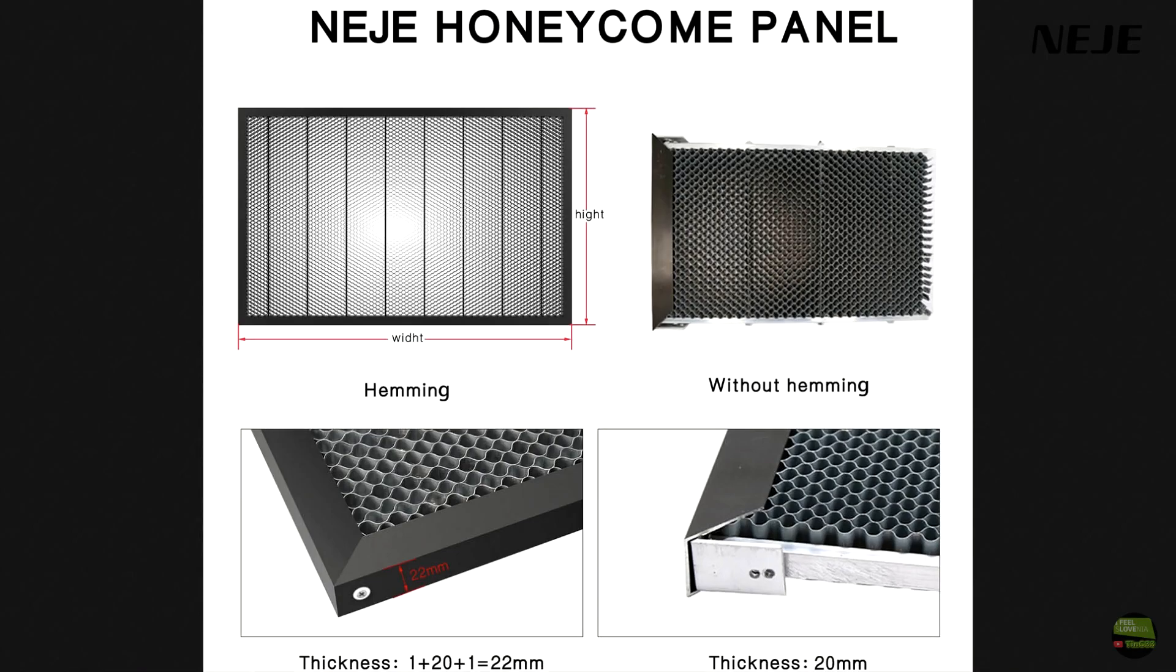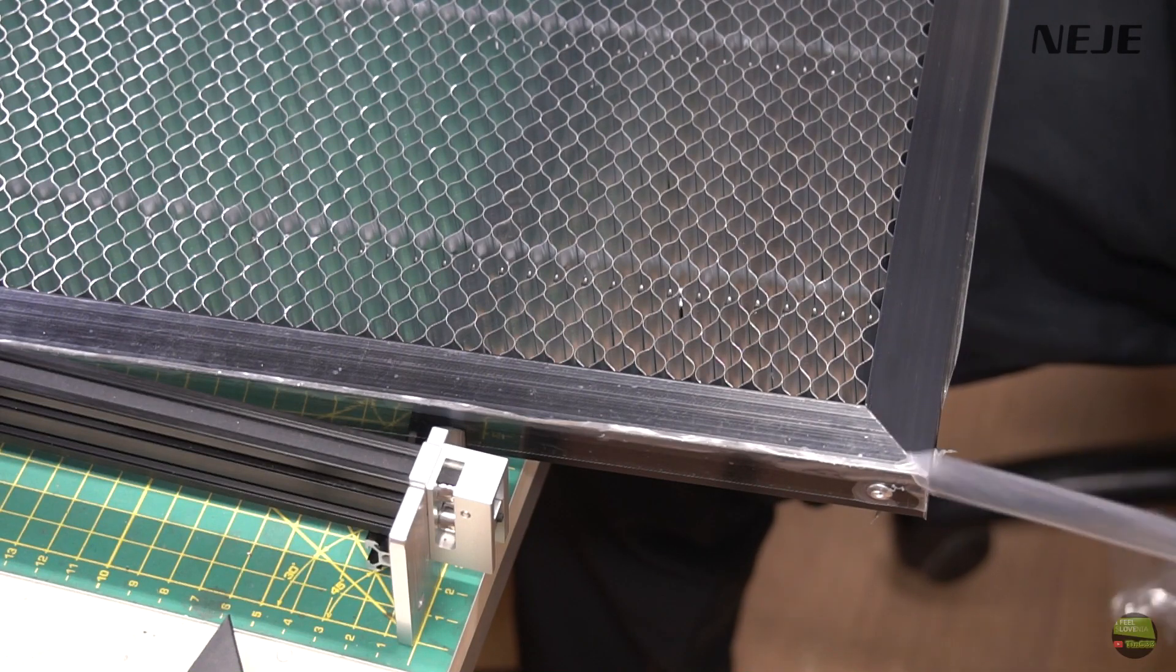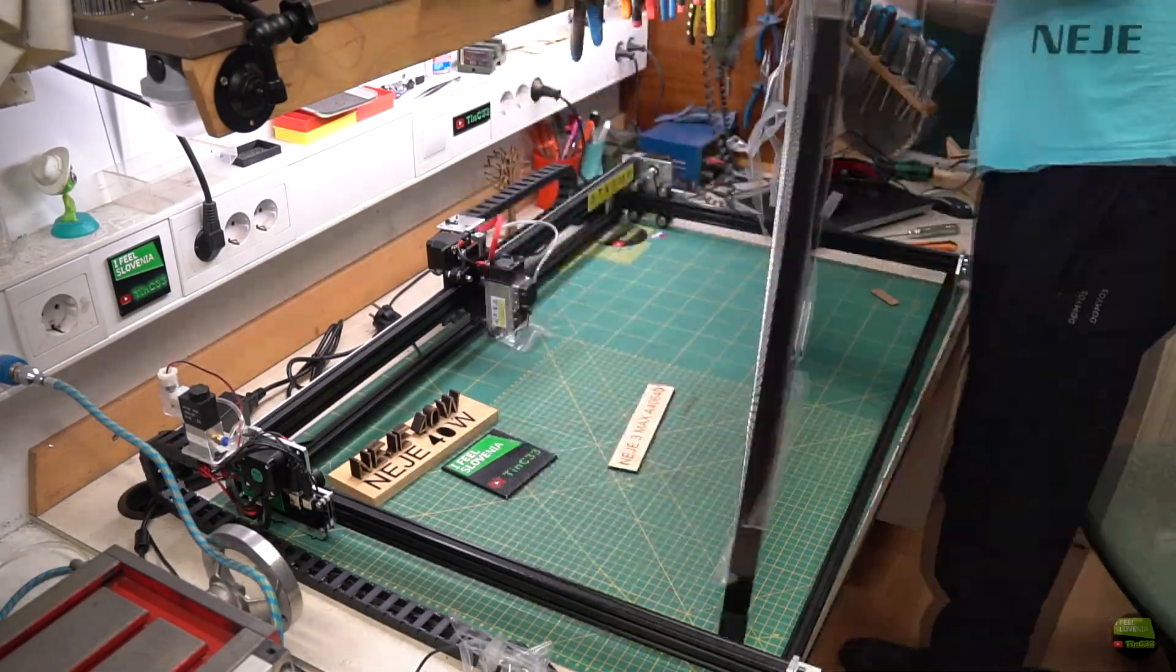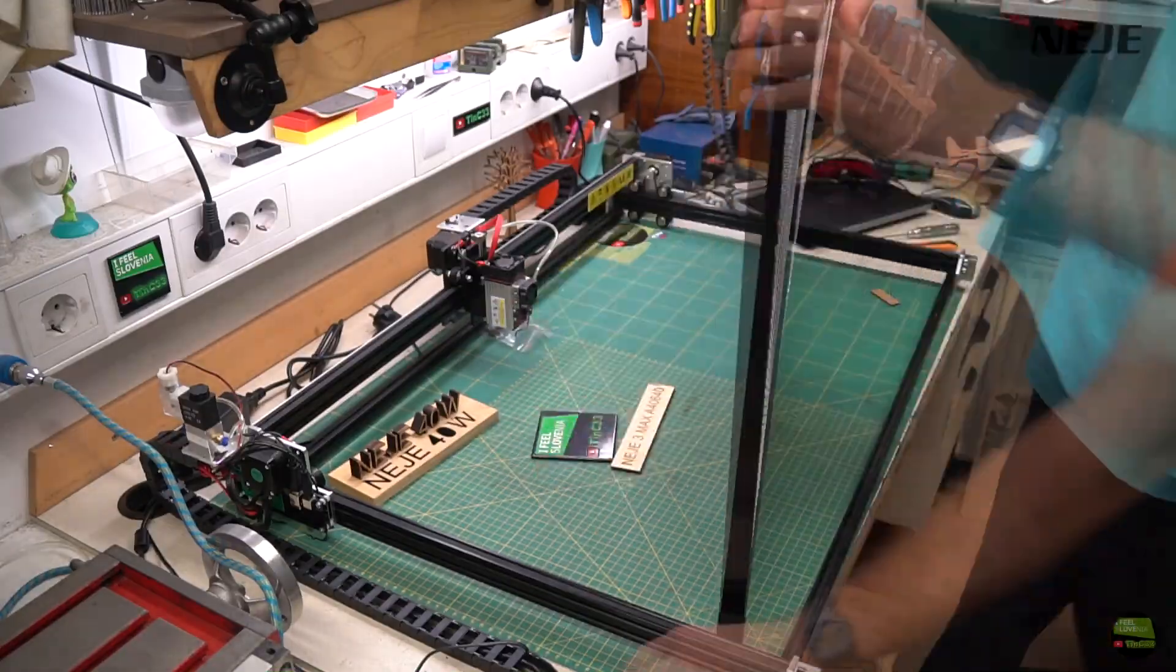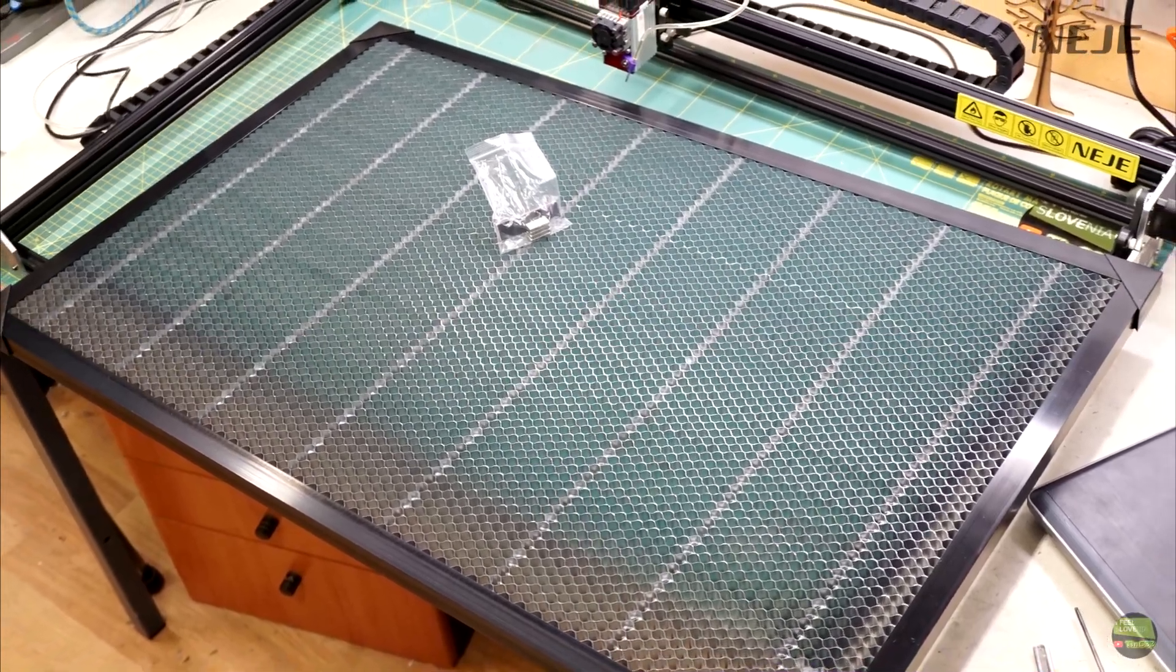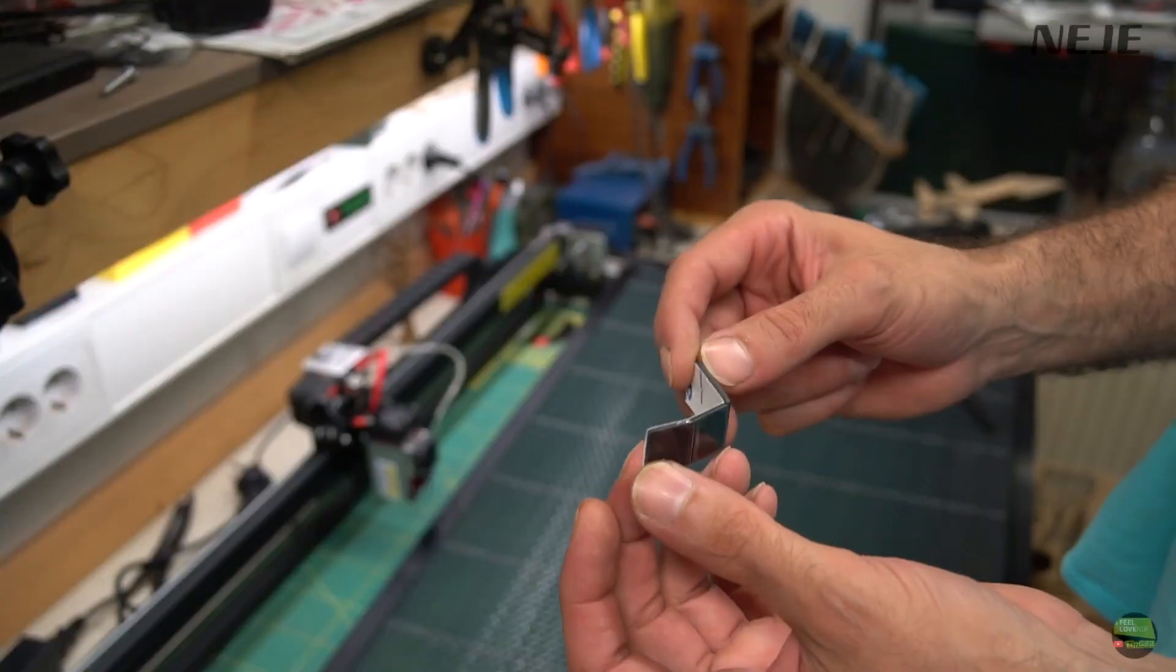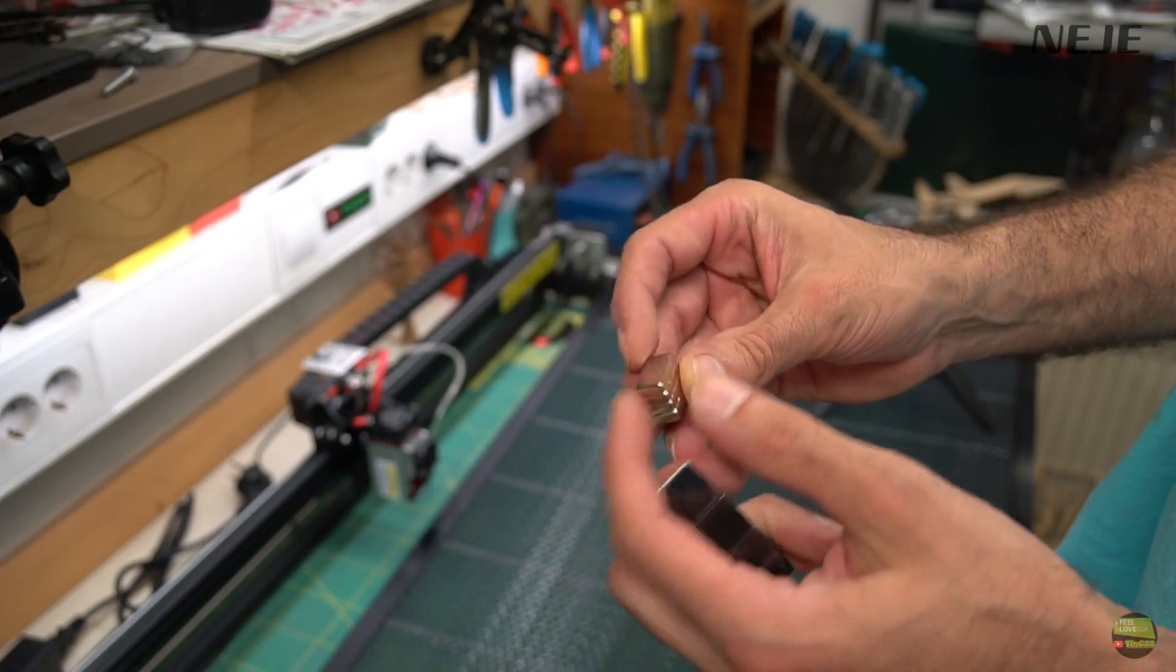Next step is to peel the protection foil from the aluminum frame. There are also plastic protection corners to remove. Removing the protection foil reveals a nicely finished black anodized aluminum extruded profile around the panel. And here we got an accessory bag with 4 self-adhesive rubber legs and 4 magnets.